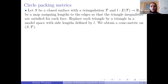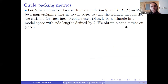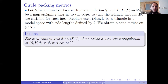That process is as follows: assume we have a closed surface with a triangulation, then consider a length map that assigns to each edge a positive number (its length) so that all triangle inequalities are satisfied for each face. We can then replace each triangle by a triangle in the model space with side lengths determined by this function to obtain a con metric on our surface. There is a foundational result that any con metric can be obtained this way — any con metric can be triangulated, though generically in infinitely many ways.